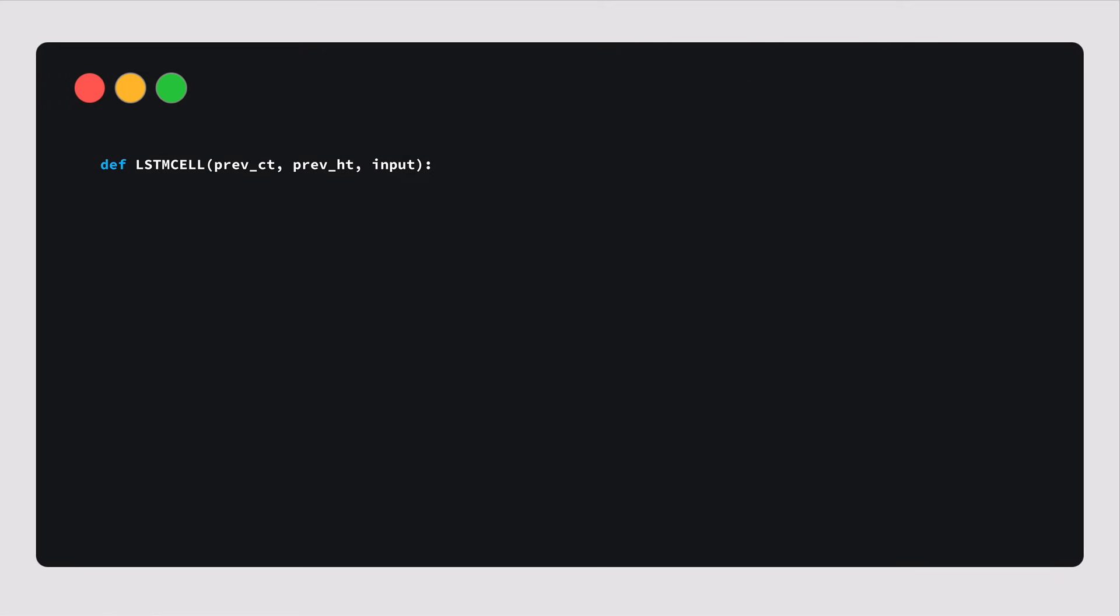For those of you who understand better through seeing code, here is an example using Python pseudocode to showcase the control flow. First, the previous hidden state and the current input gets concatenated. We'll call it combine. Combine gets fed into the forget layer. This layer removes non-relevant data. Then the candidate layer is created using combine. The output holds possible values to add to the cell state. Combine also gets fed into the input layer. This layer decides what data from the candidate layer should be added to the new cell state.